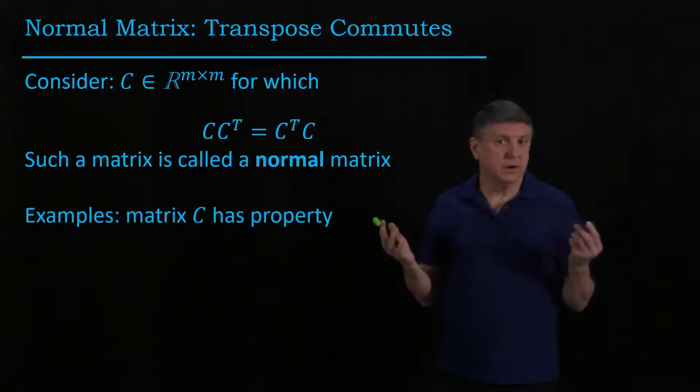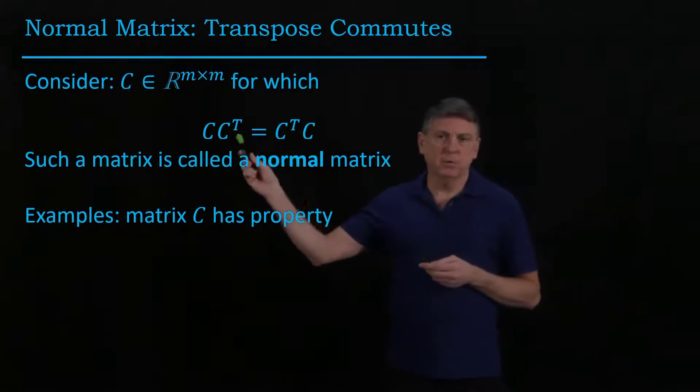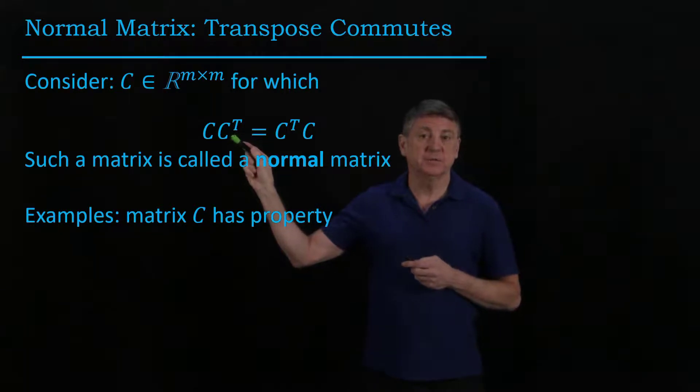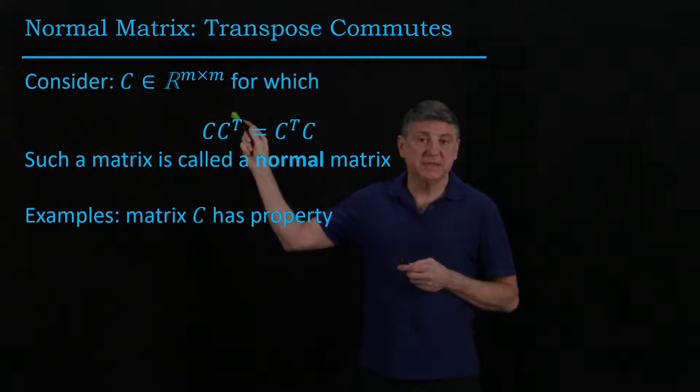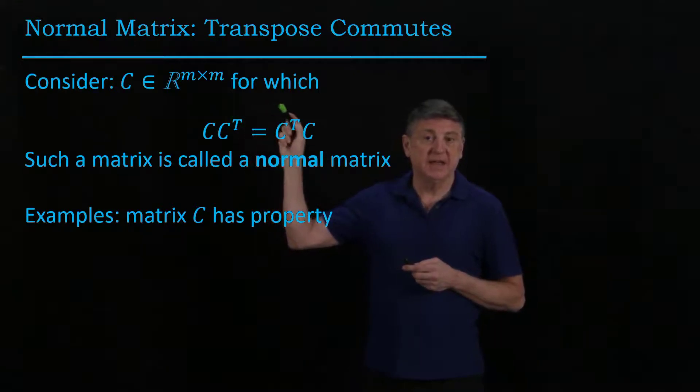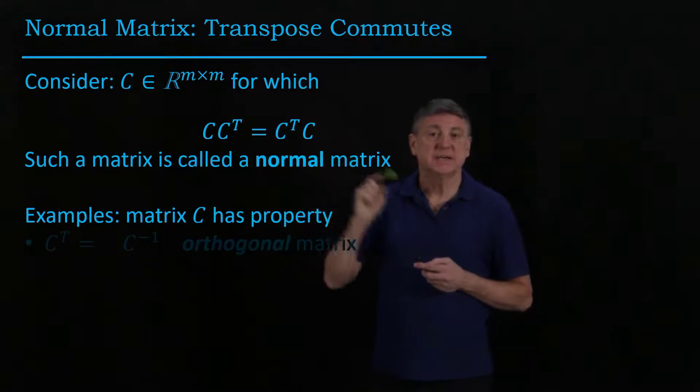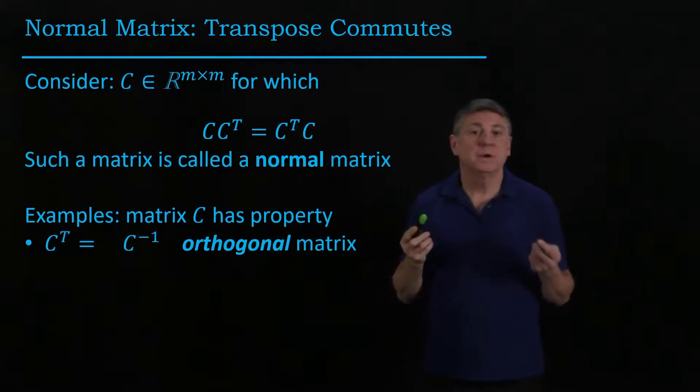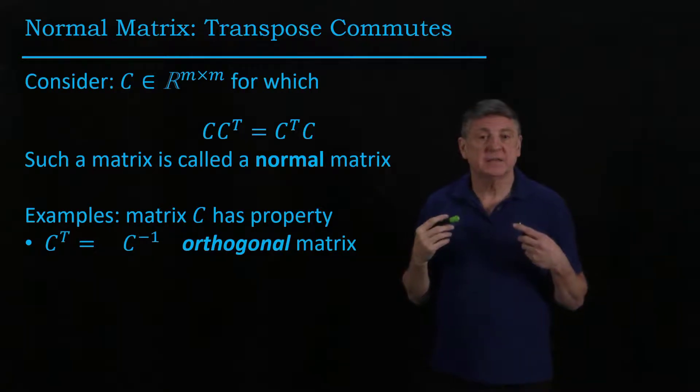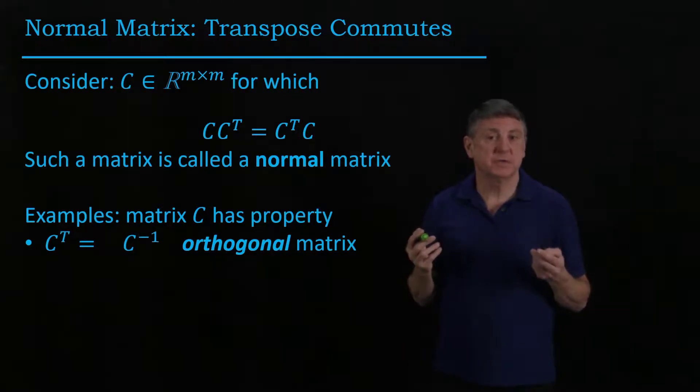Now, what are some quick examples that we could think of? Well, suppose that C transpose was the inverse of C. Then C times C inverse is the identity, and C inverse times C is the identity. When a matrix has an inverse that is the transpose of the matrix, we call that an orthogonal matrix.